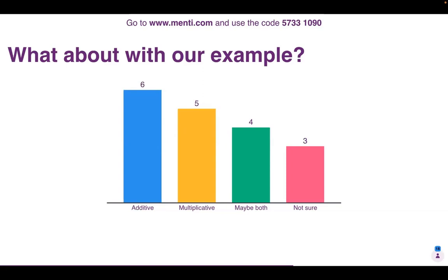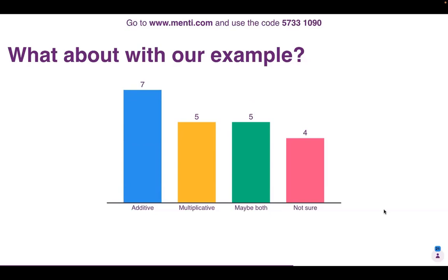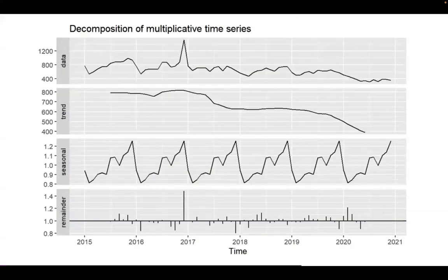We have the majority suggesting additive, but there's a close call between maybe both and multiplicative. When working in RStudio, you'll typically be told what type of structure you have. In this instance, this was actually a multiplicative plot — as you can see, the reason is we had a decreasing trend, but the amplitudes between our weekly points were different. There was no consistency in those weekly trends.